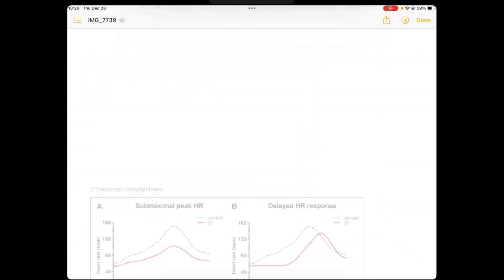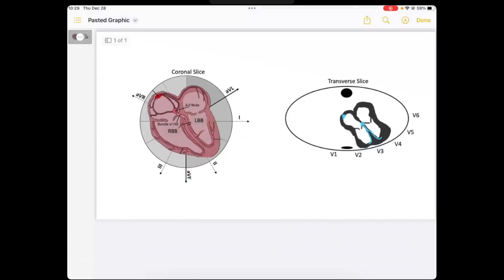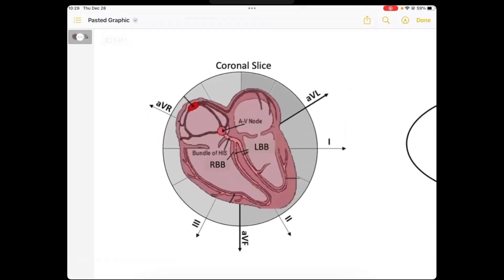And if those P waves are driving the QRS complex, then I can say it's a sinus rhythm. Why do I say that I look at those leads? Well, look at my coronal slice here, which is my limb leads. These are my limb leads here. And you see my sinus node is located. This is my sinus node.